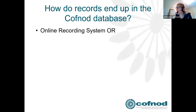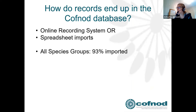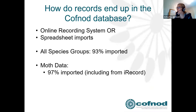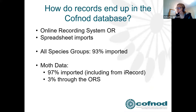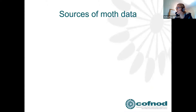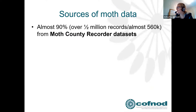There are two methods for records entering the Covnod database: the online recording system (ORS), and imports from spreadsheets. Overall, 93% of data is imported from spreadsheets; for moths it's even higher. This includes data from iRecord — there's no need to put a record into both iRecord and Covnod's ORS, as Covnod downloads from iRecord regularly. You should never need to submit records twice.